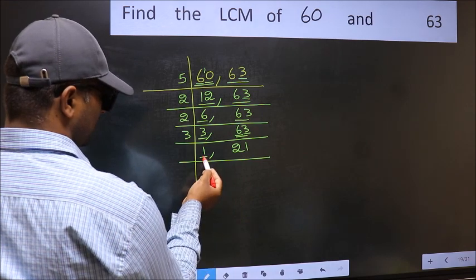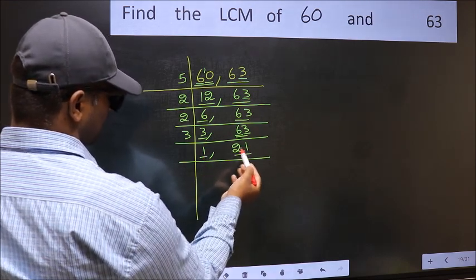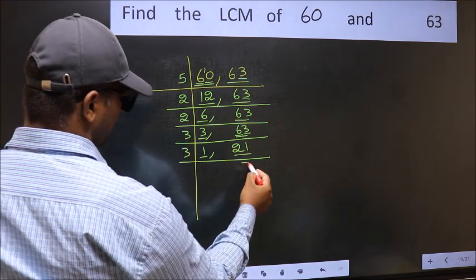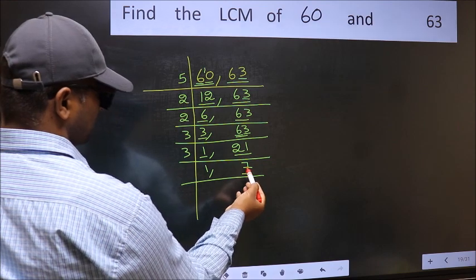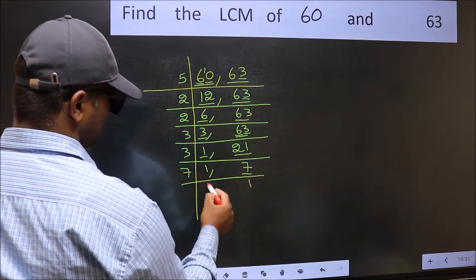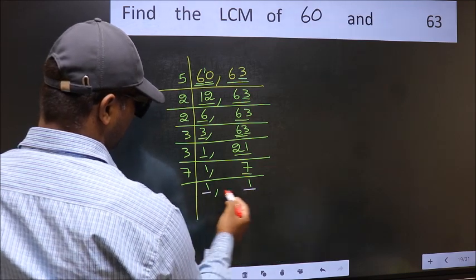Now we got 1 here, so focus on the next number, 21. 21 is 3 sevens 21. Now here we have 7. 7 is a prime number, so 7 once 7. So we got 1 in both places.